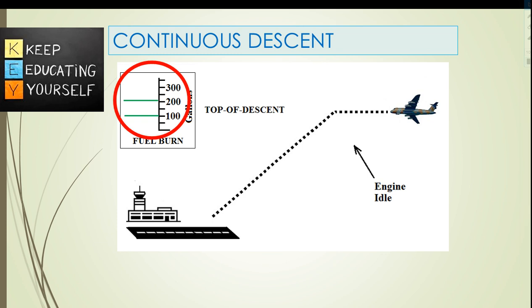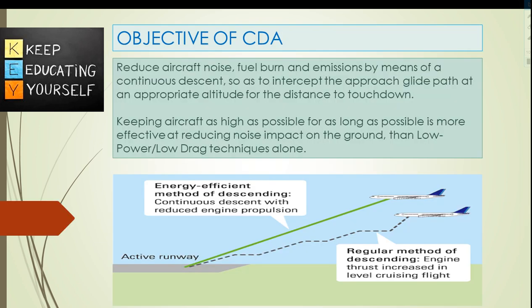The fuel burn chart shows fuel consumption of 100 to 200 gallons per flight compared to 300 gallons for the step-down descent procedure. Objectives of CDA: reduce aircraft noise, fuel burn, and emissions by means of a continuous descent. Keeping the aircraft as high as possible for as long as possible is more effective at reducing noise impact on the ground than low power, low drag techniques alone.